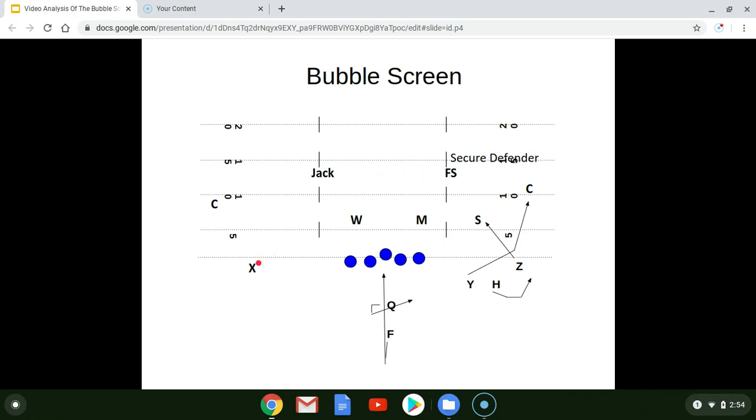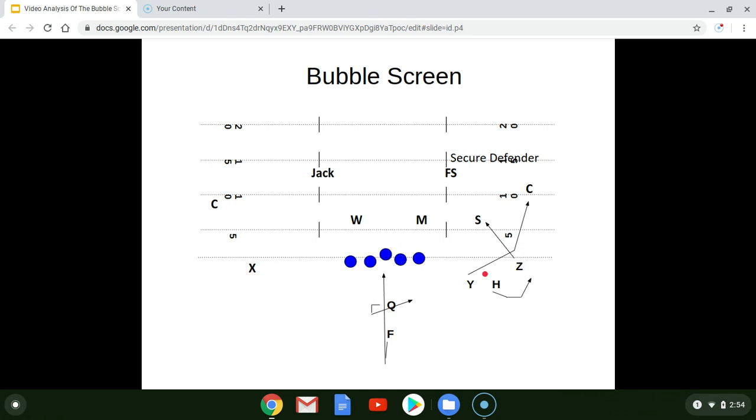We have a single receiver into the boundary. And we're going to block the bubble screen in this way. We're going to down block. First defender inside, the Z will block down. And the Y will arc to the corner. The Z goes first to the Sam linebacker. The Y will arc to the corner.